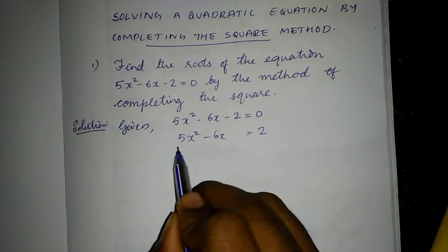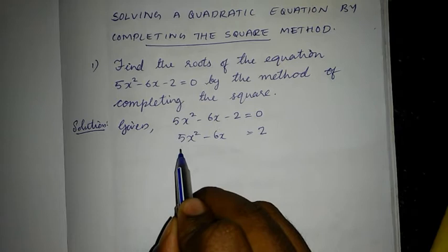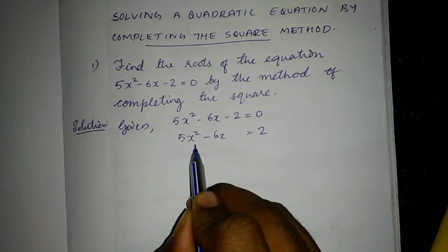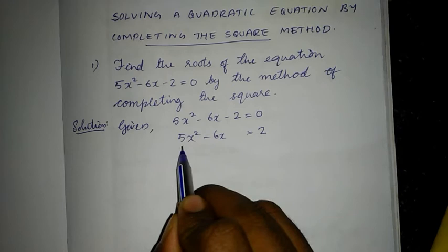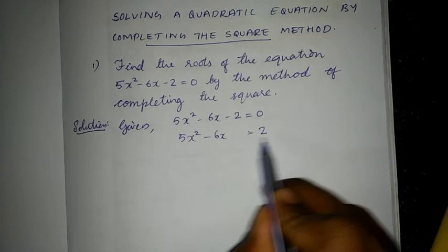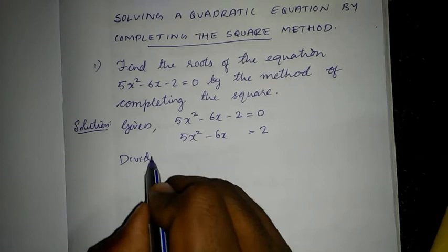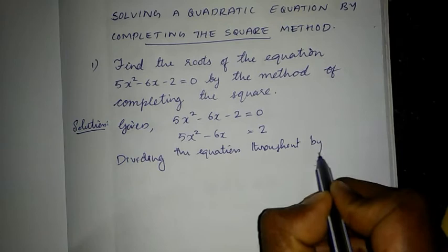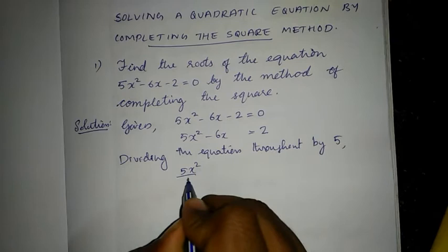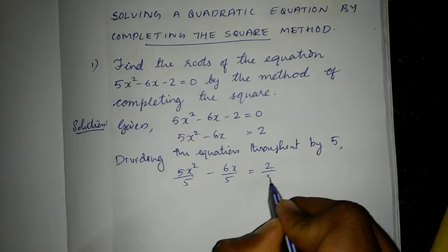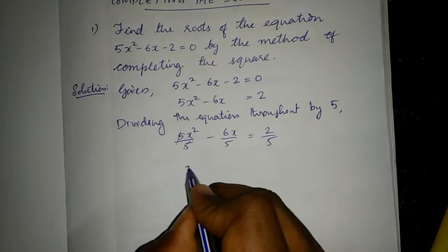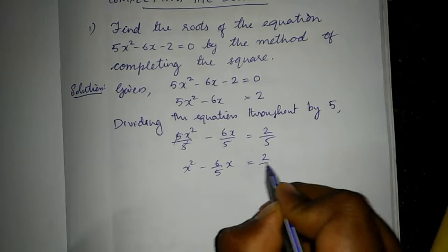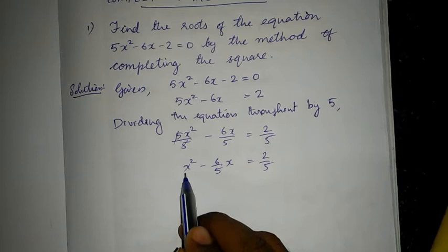The next thing to notice is that the coefficient of x² should be 1. But here the coefficient of x² is 5. What you have to do is divide the whole equation by 5. Dividing throughout by 5, we get: 5x²/5 minus 6x/5 = 2/5. The 5s cancel, giving us x² minus (6/5)x = 2/5. This is the first preliminary step — the coefficient of x² is now 1.